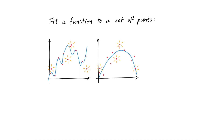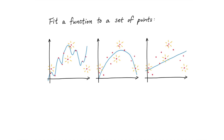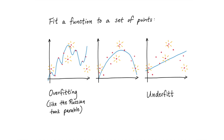Does this always mean that simpler functions are better? Well, not necessarily. If we try to fit these points with one of the simplest functions, a straight line, that would also generalize poorly. The first case is an example of overfitting, while the last is an example of underfitting. Effective models fall in the middle ground between the two.